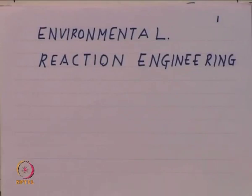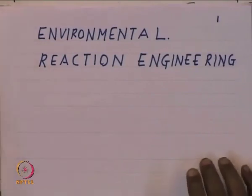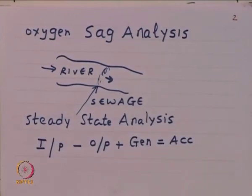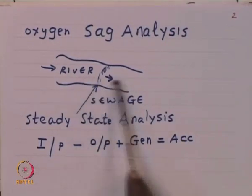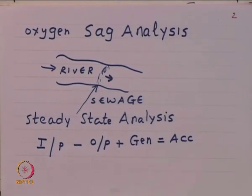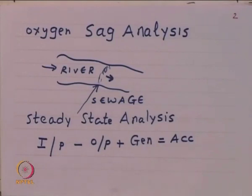We look at a problem in environmental reaction engineering. The background is as follows: all over the world there is a general tendency to put waste water, particularly sewage, into rivers. The river is able to take care of the pollution in the water. This practice has been evolved by sanitary engineers over a long time, and the oxygen sag analysis tells you what those guidelines are.